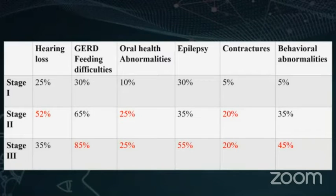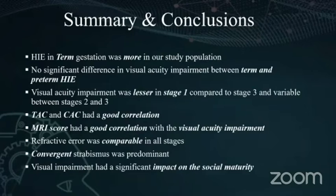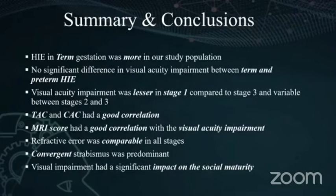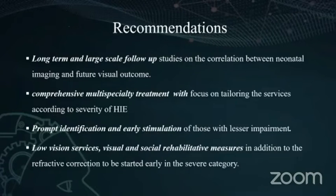On summarizing the results, HIE was more common in term gestation in our study population. There was no significant difference in acuity levels between term and preterm, and acuity impairment was lesser in stage one. Good correlation was found between Teller and card acuity and also with MRI scoring. Refractive error was similar across clinical stages and convergence strabismus was the predominant finding. We recommend large-scale follow-up studies to correlate the predictive role of neonatal imaging on future visual outcome in perinatal HIE, and we need to focus on tailoring services according to the severity of the disease.